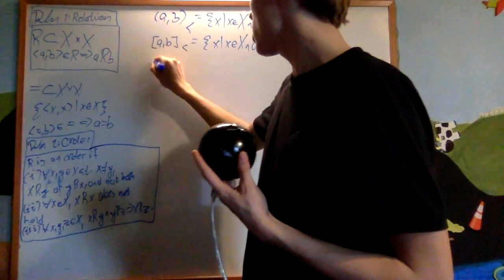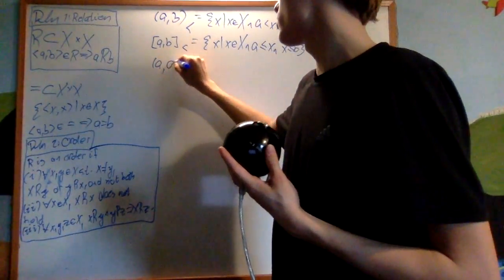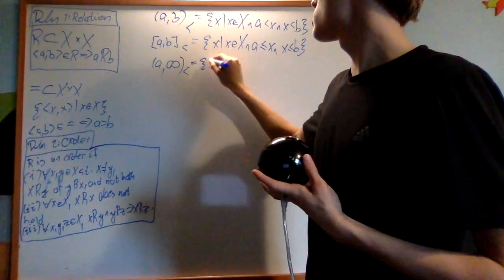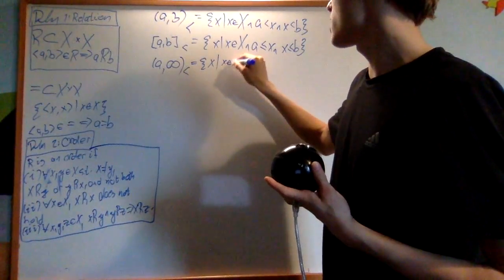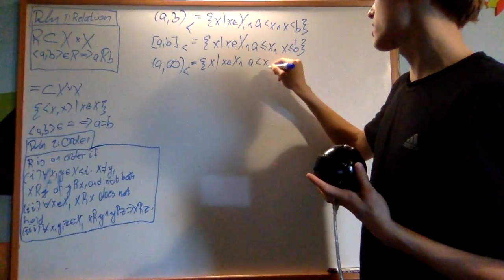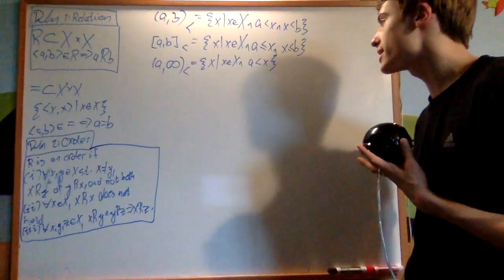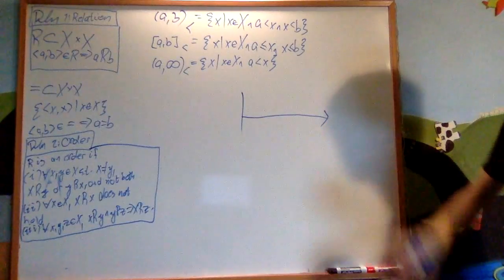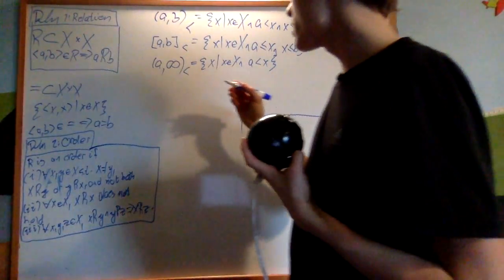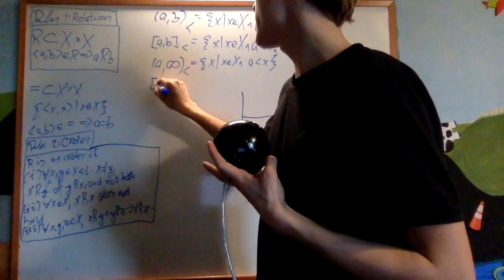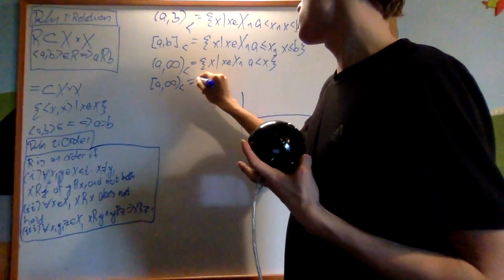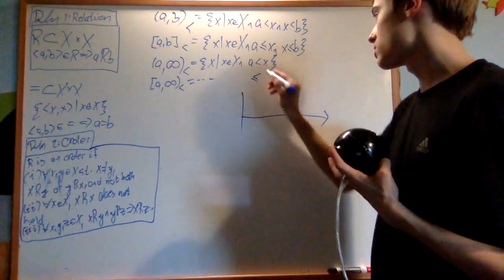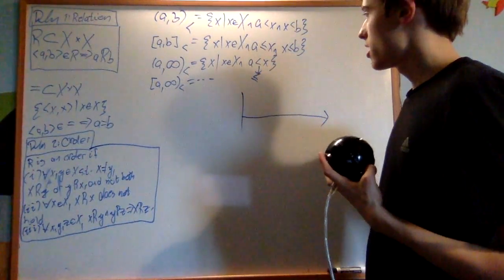And then there's also this other open interval, which is the open interval between a and infinity, which is equal to the set of x such that x is in X and a is less than x. There's no upper condition on it. All we need to do is have a lower point and we can go up however far the set allows us to go up. And then similarly, I could define closed [a,infinity), which is just where I replace this with a less than or equal to.